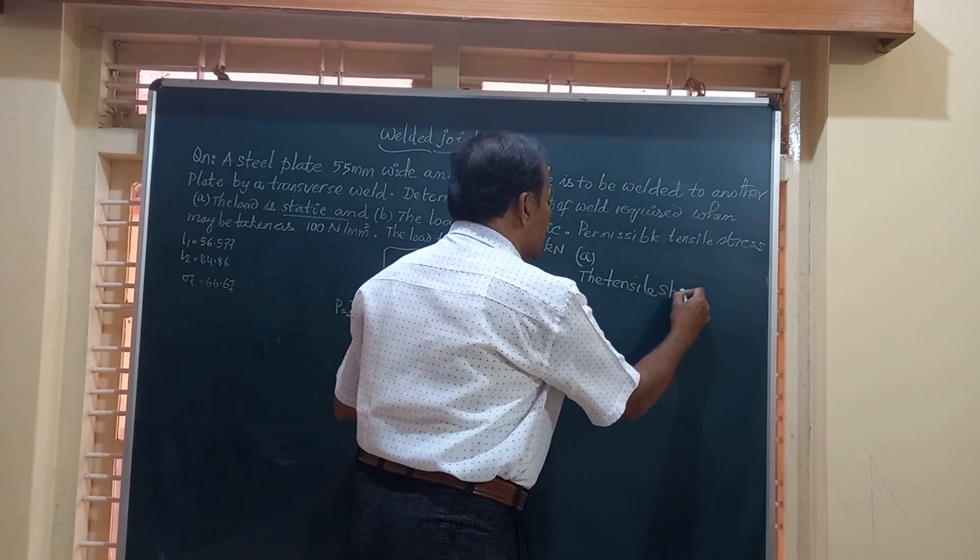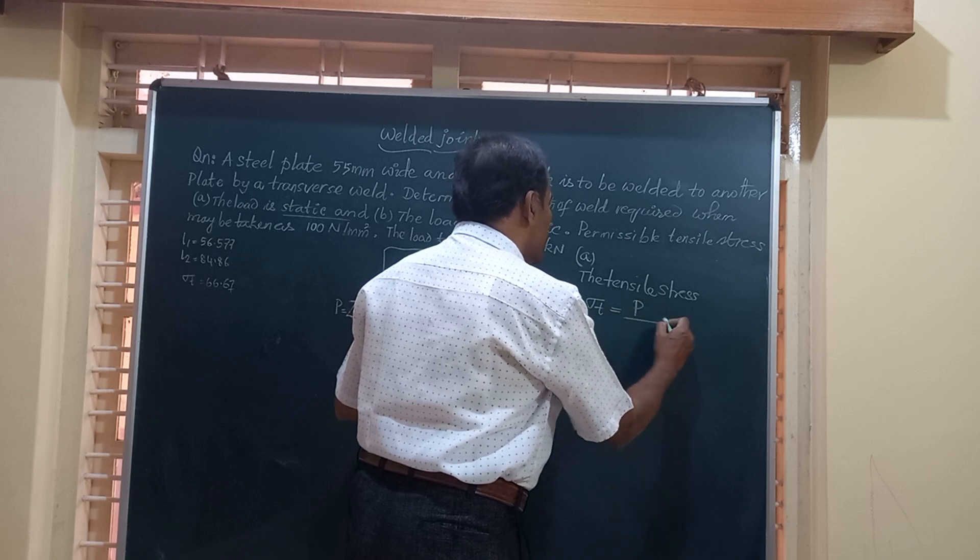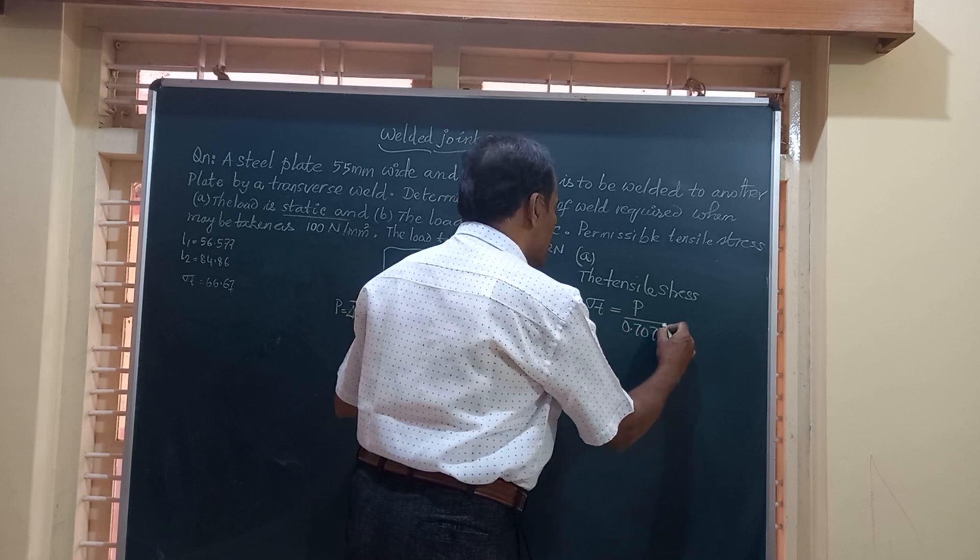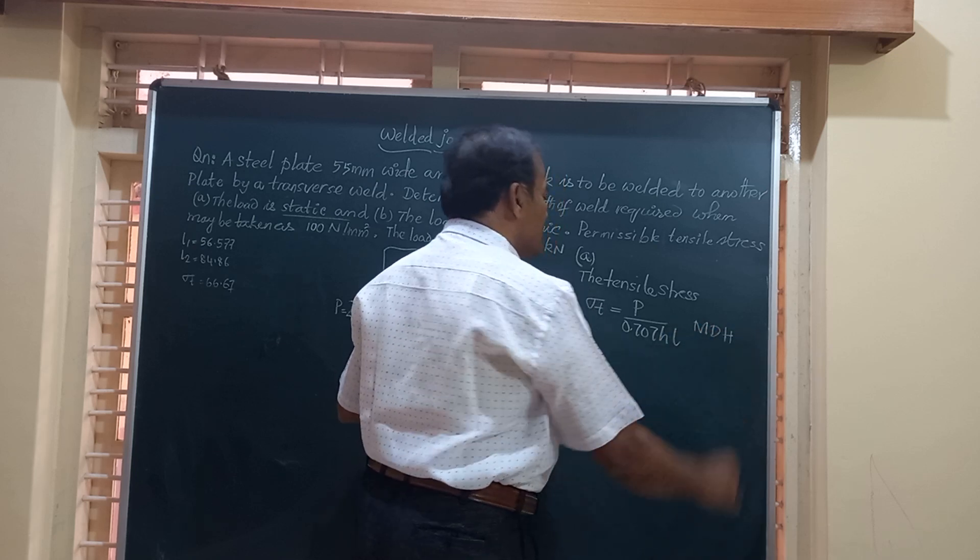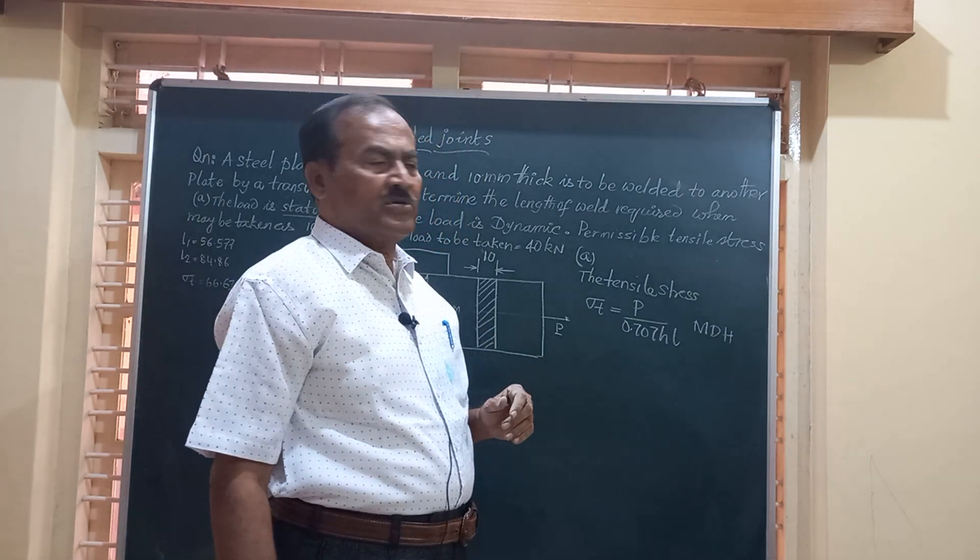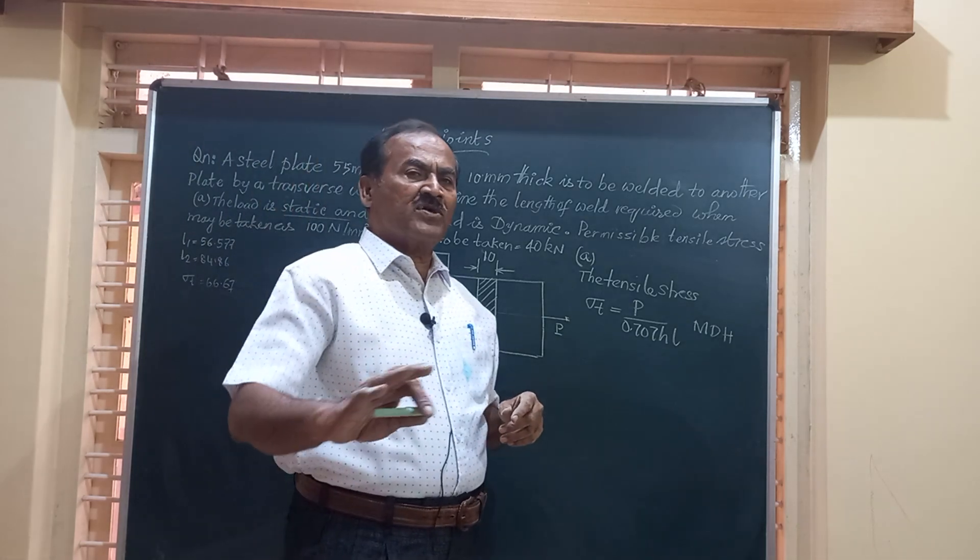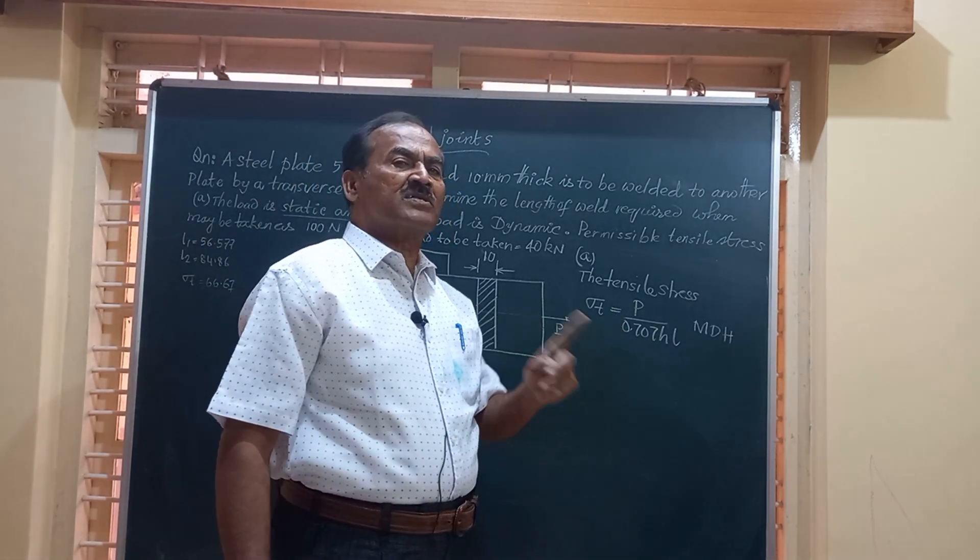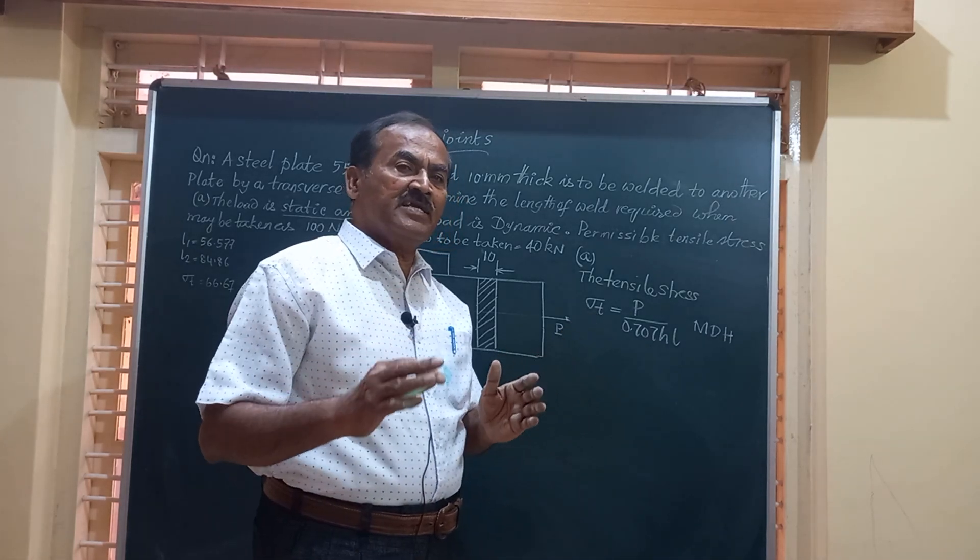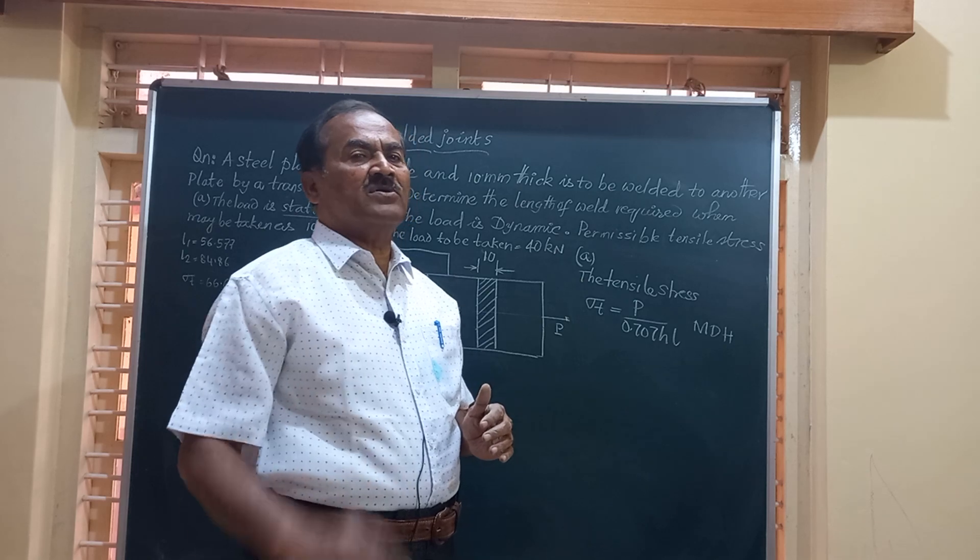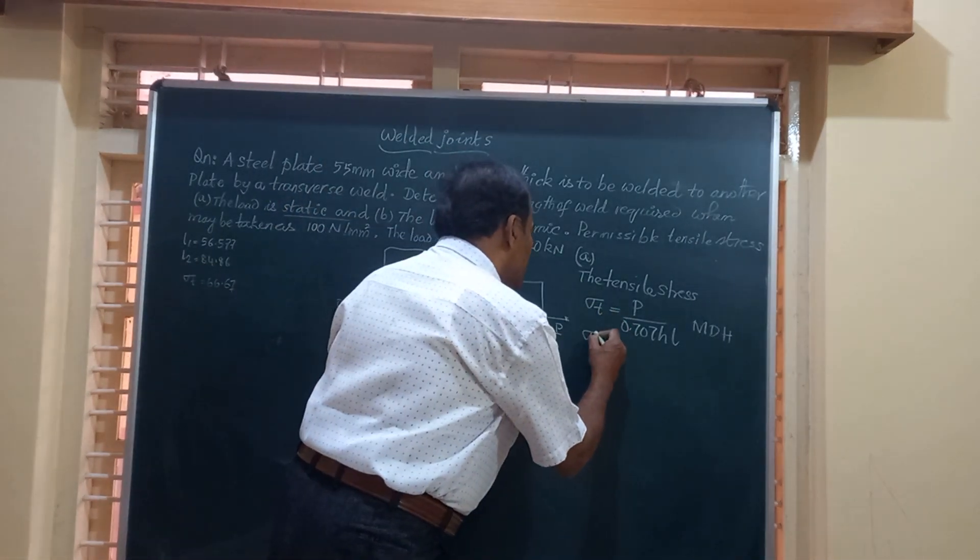Sigma tensile is equal to P divided by 0.707 H into L. This equation is available in the machine design data handbook. I am considering case one when the load is static. Both for static and dynamic loads we make use of the same formula, but the value of the sigma T will be sufficiently lesser in case of dynamic load.